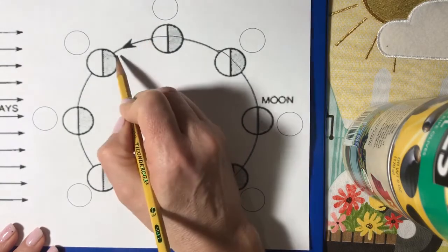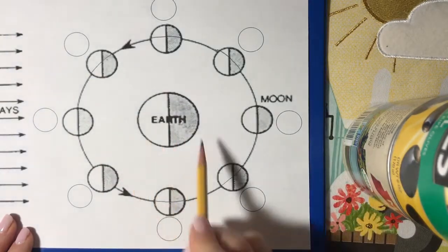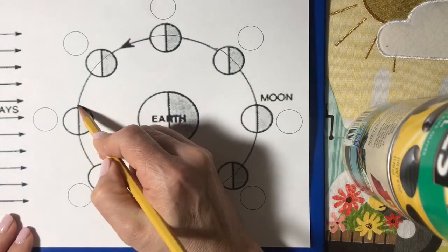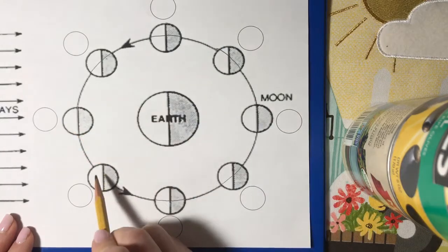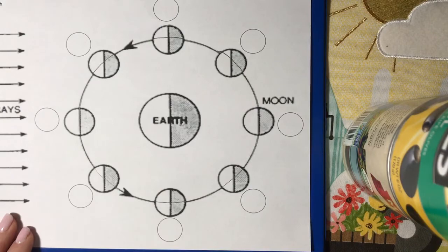And the moon also revolves counterclockwise around the Earth. So again, what I'm doing is I'm just connecting the orbit straight through to complete the circle. Everybody see that?